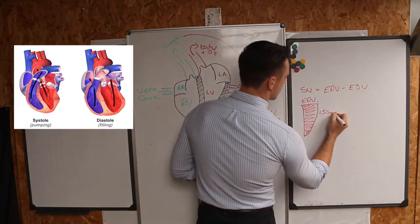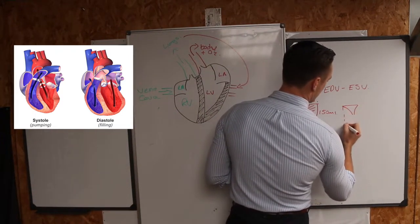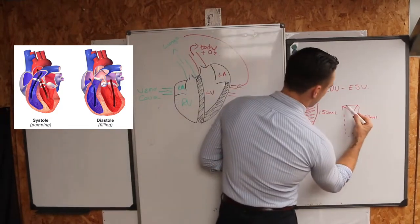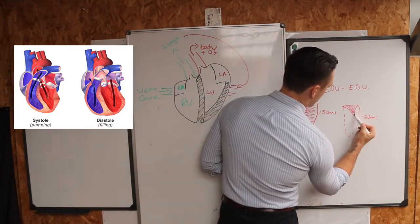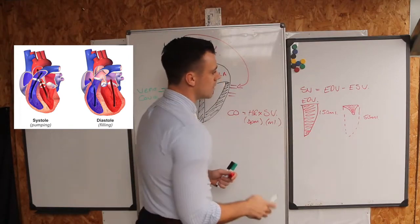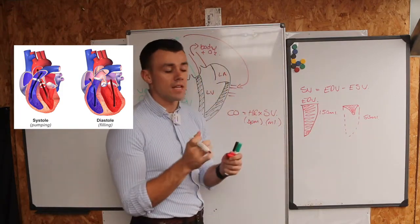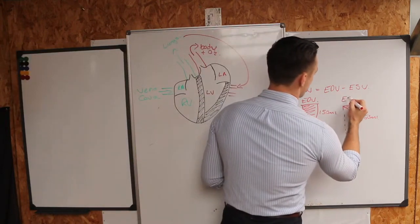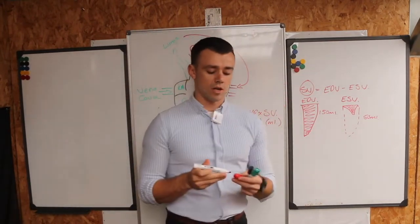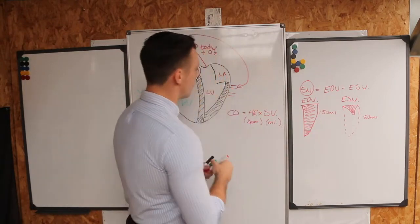End-systolic volume is similar but in this case the blood has been squeezed out by contraction. For example, let's say end-diastolic volume is 150 millilitres and end-systolic volume is 50 millilitres — there's always going to be a little bit left over. An efficient heart is going to maximize the blood we're getting out per beat. So end-diastolic volume is your full heart, end-systolic volume is your contracted heart after it's squeezed everything out, and the difference between the two gives us stroke volume — in this case 100 millilitres.